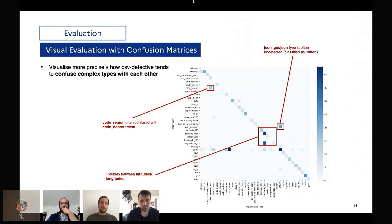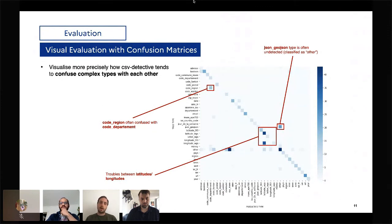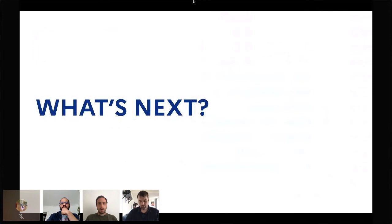The second evaluation method we use is the confusion matrix, which allows us to detect what complex types CSV Detective confuses with other types. For example, region code is often confused with department code. We have trouble differentiating latitude and longitude. JSON types are often not really well detected, etc. Now you know how it works — I'll let Pavel talk about the future of CSV Detective.